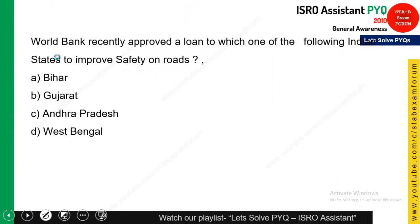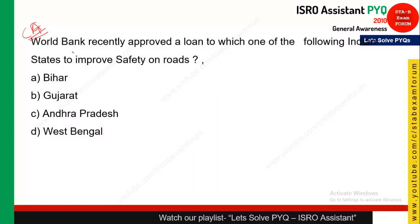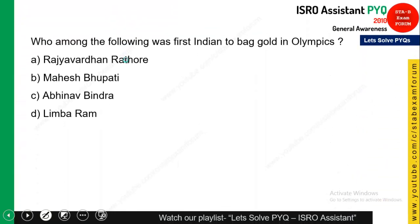Quickly coming to the next question — this is from current affairs at that particular time. The question says: the World Bank recently approved a loan for which of the following Indian states to improve safety of law? We are skipping this question as we do not have the current answer for it.